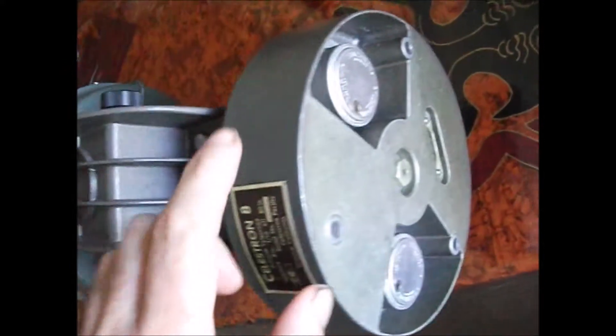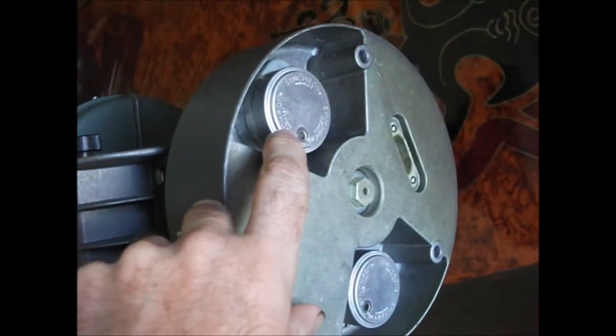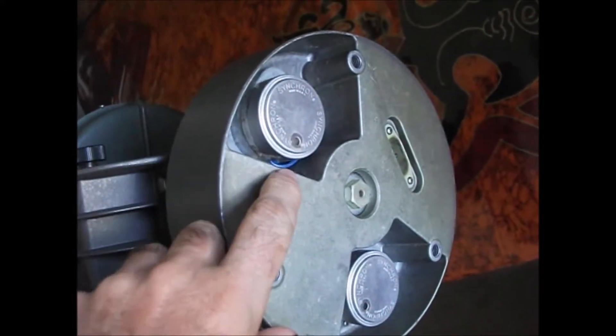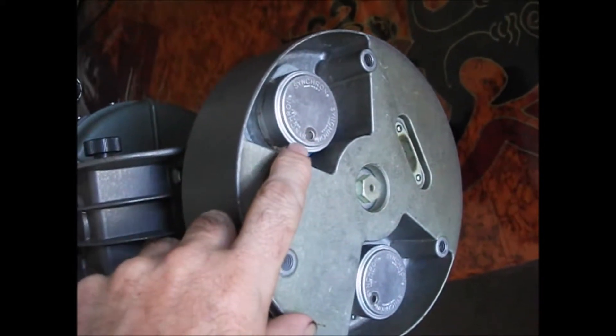This is the earlier version that uses two AC drive motors. The later version of the Celestron uses a DC drive motor.